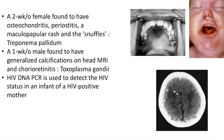Case: 2-week-old female found to have osteochondritis, periostitis, maculopapular rash, and snuffles — congenital syphilis caused by Treponema pallidum. Features include osteochondritis, periostitis, maculopapular rash. This picture shows Hutchinson teeth (notched incisors) and syphilitic rhinitis (snuffles).